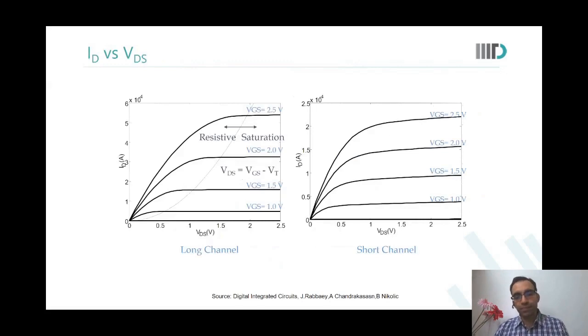Student: When electric field is increasing, does it mean that velocity saturation is happening because there is more collision? Professor: Yes. The speed has become so high that the collision rate increases so much that velocity cannot really increase beyond that. We've reached that electric field at which saturation happens. Saturation happens at a particular electric field because now this electric field will not increase the velocity. And in short channel devices, you reach that electric field much faster, much earlier.